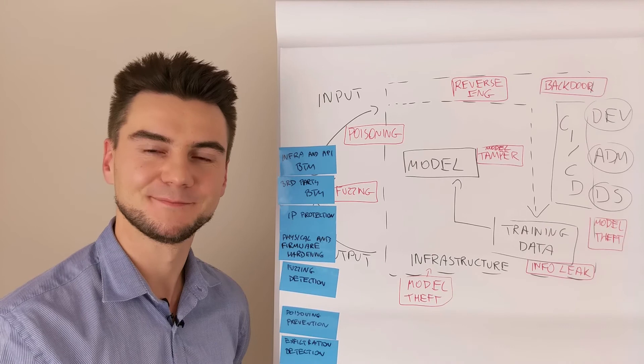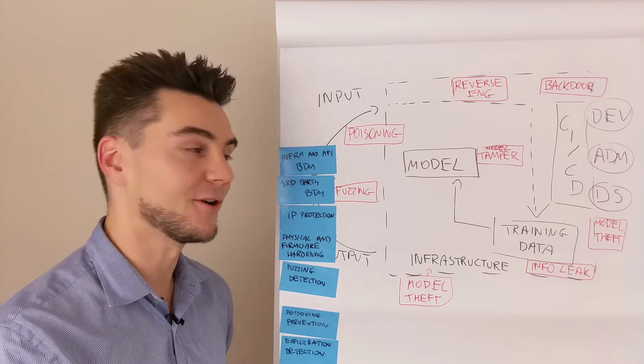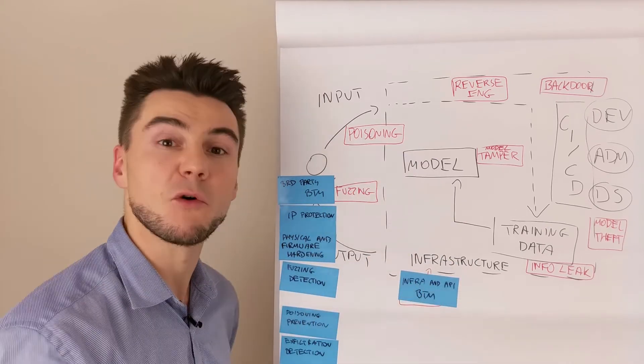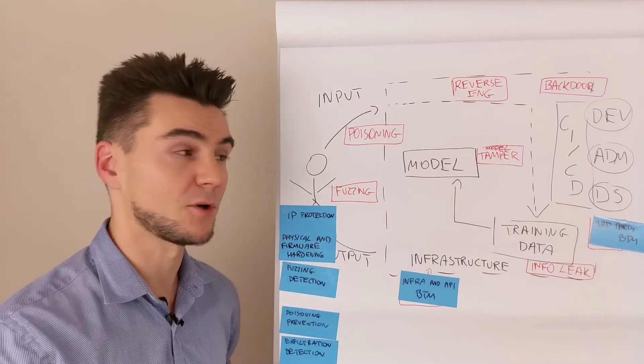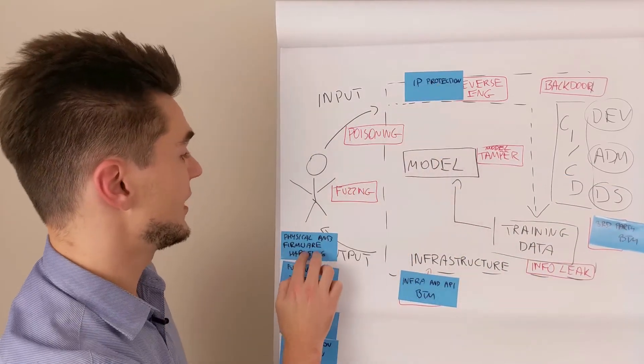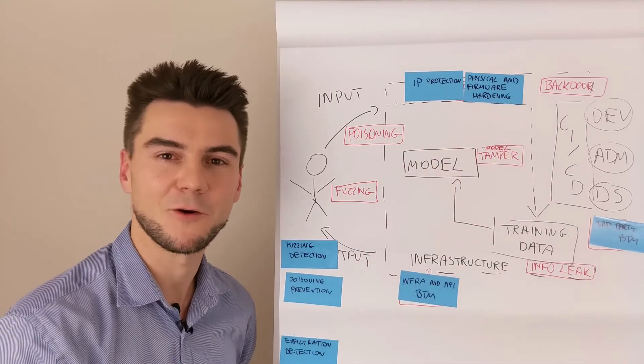Instant mitigations. Infrastructure and API-based threat models, and also a base threat model for third parties. Intellectual property protection and also physical and firmware hardening.